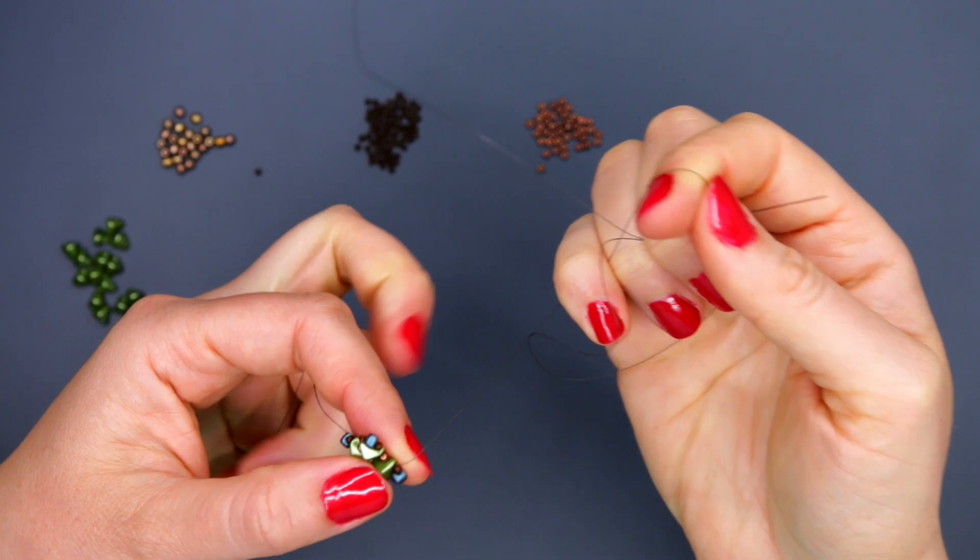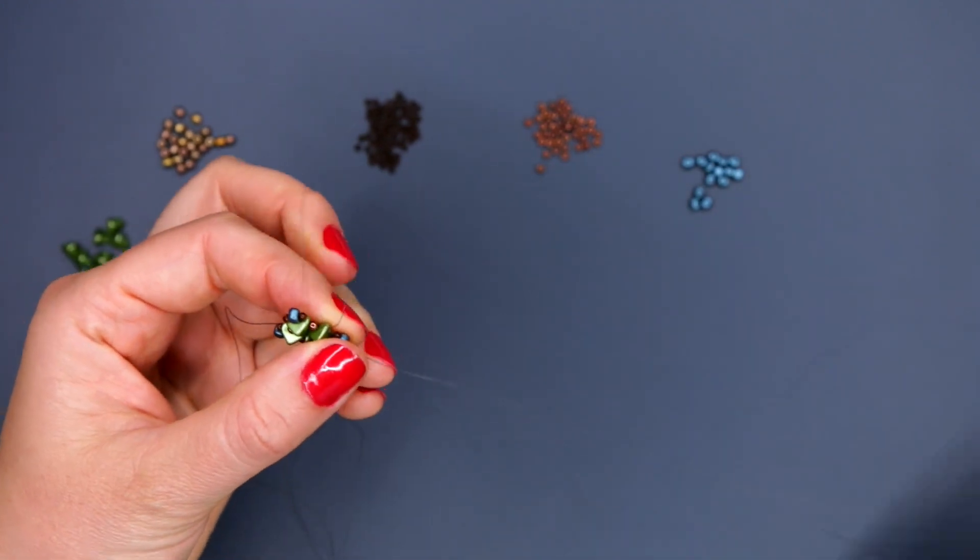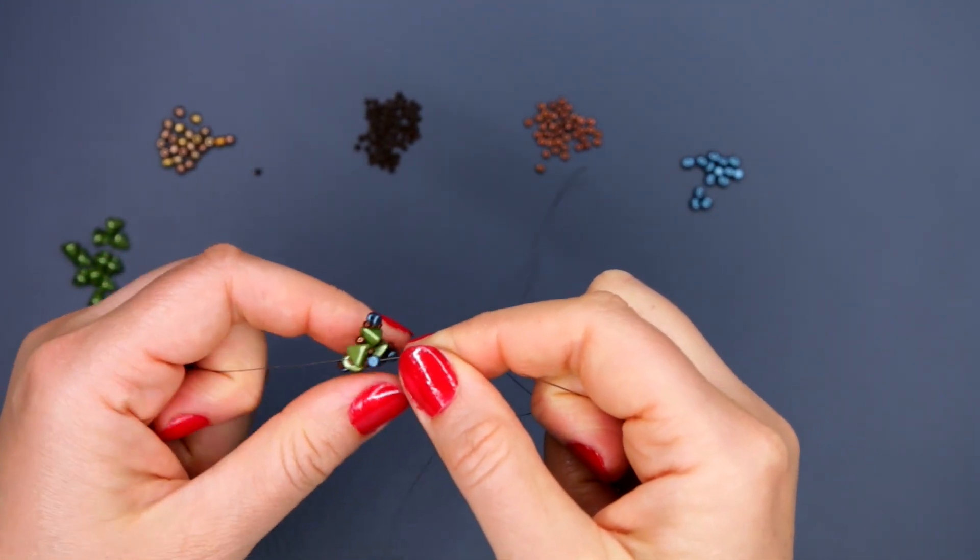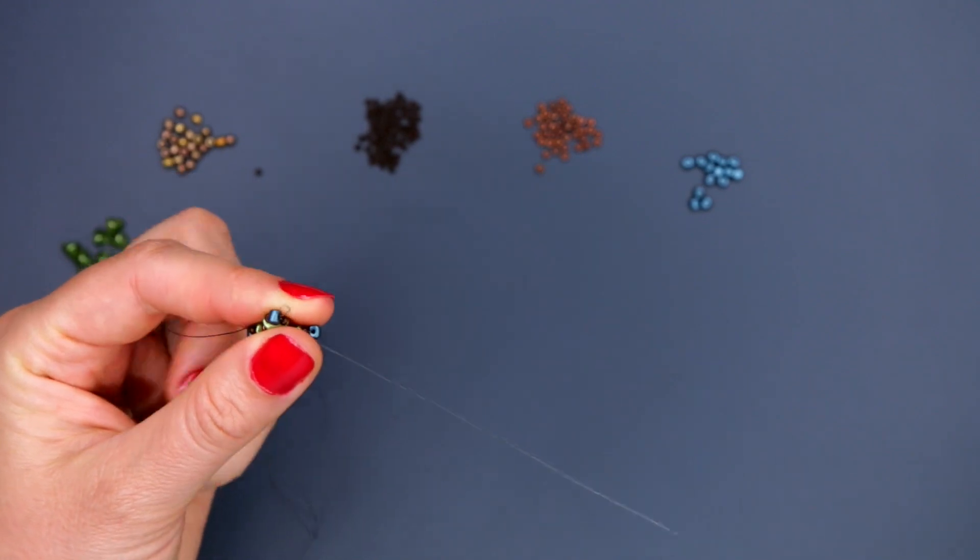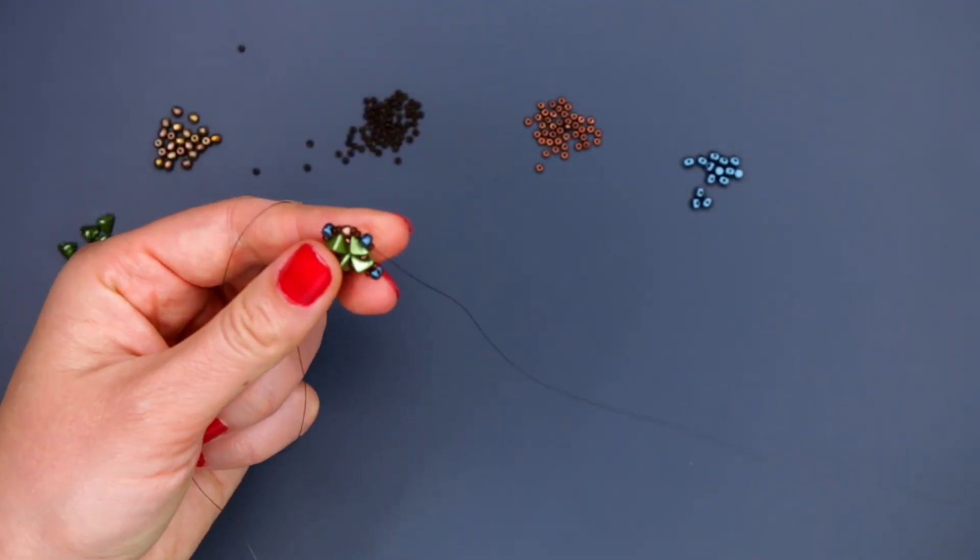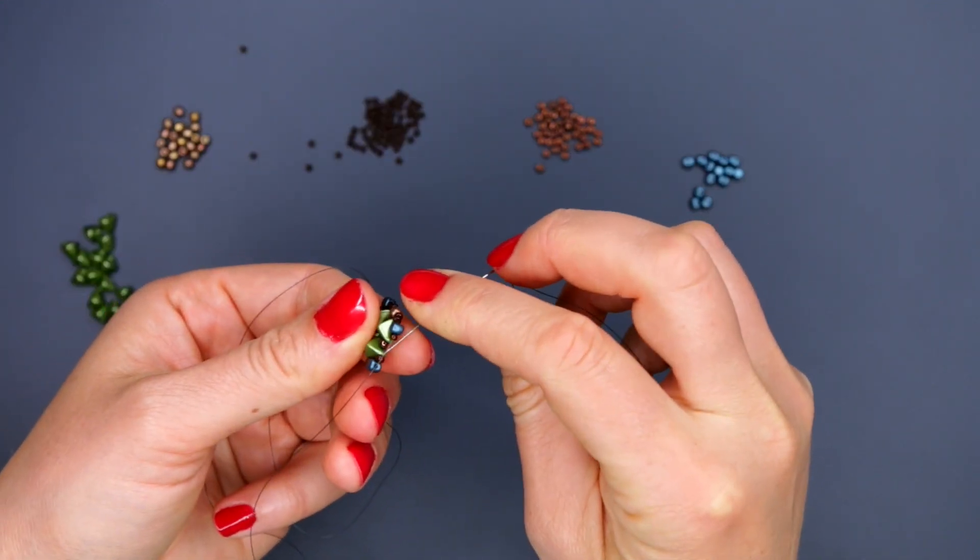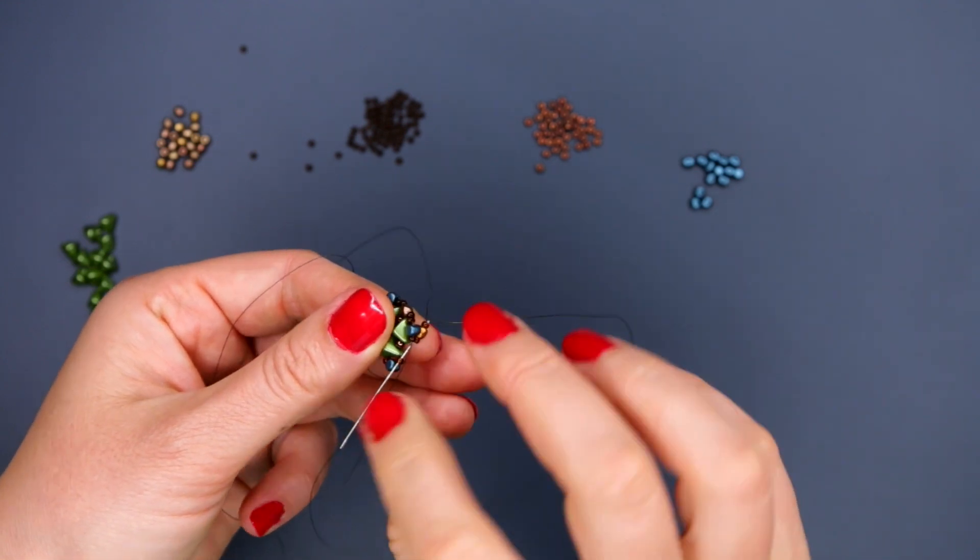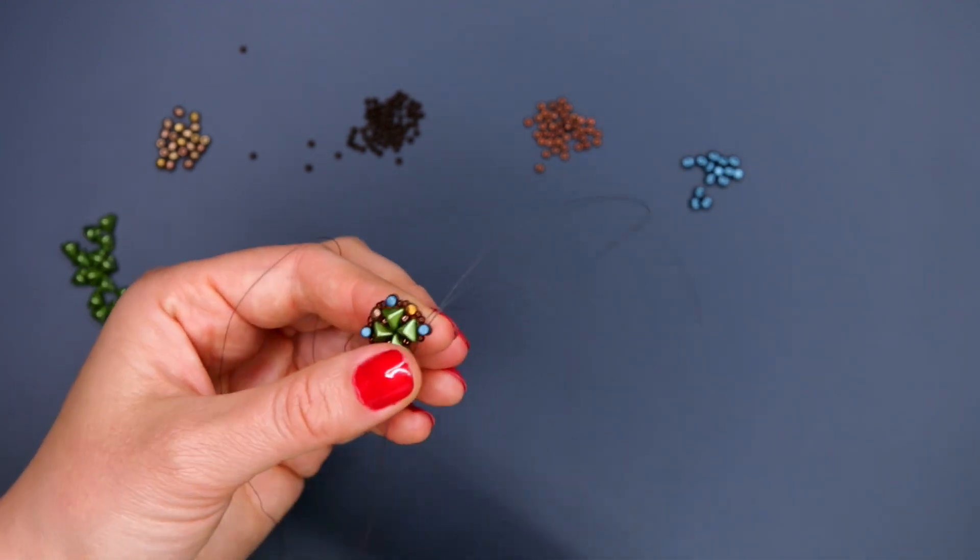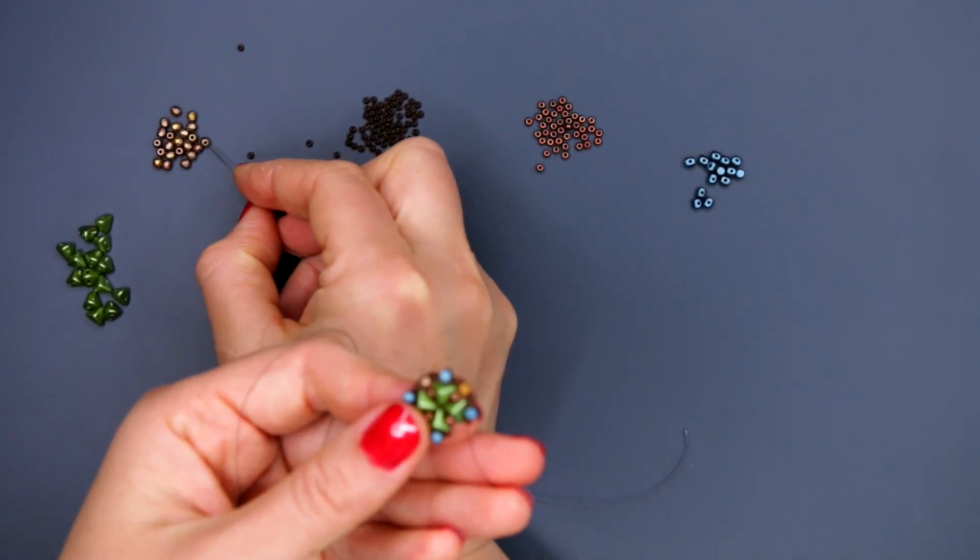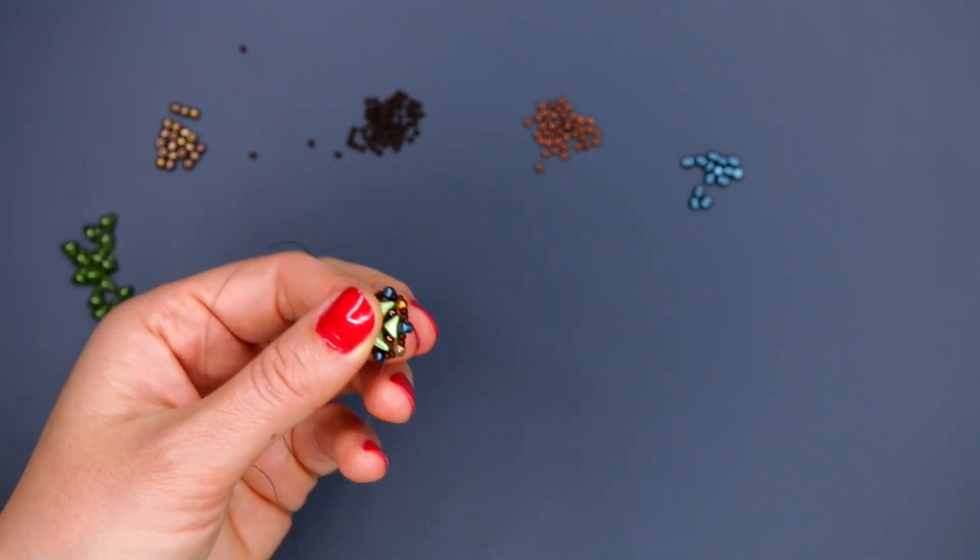Now we are going to do the second circle and add decorations with faceted beads. Go once more through seed bead, minus bead and seed bead. And string the combination: seed bead size 11, faceted bead, seed bead size 11. Go through the whole combination above the next triangle: seed bead, minus bead, seed bead. And again, the same. Close the circle and first unit of our bracelet is ready.